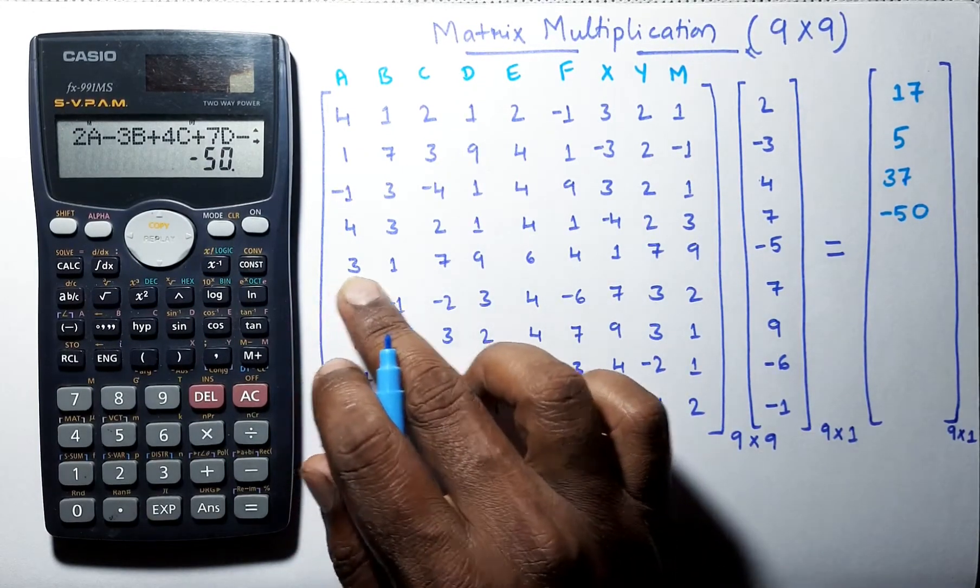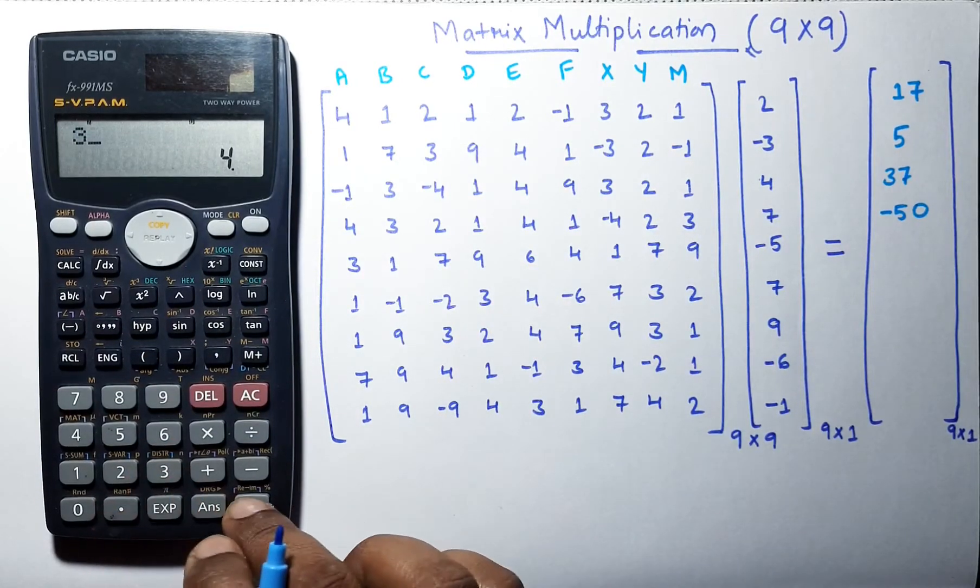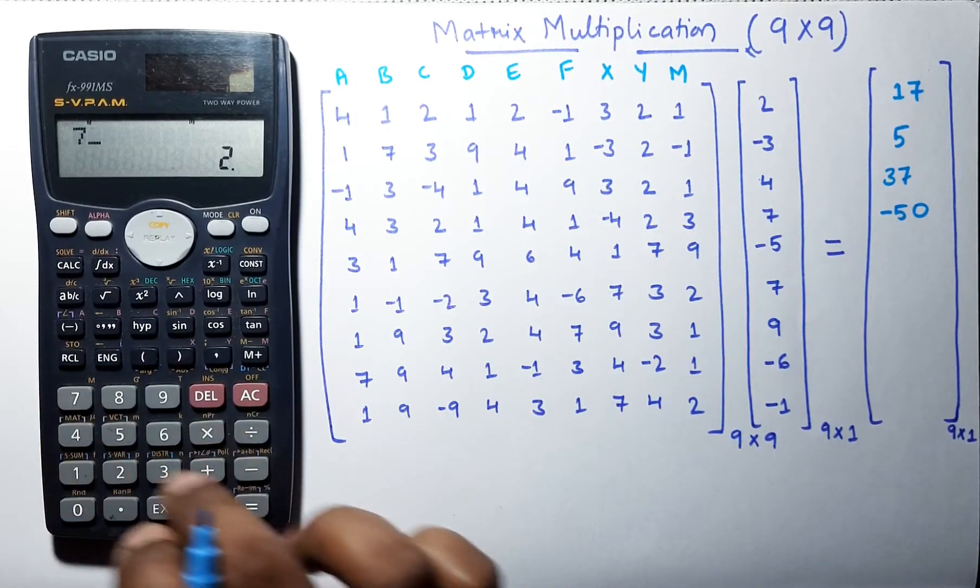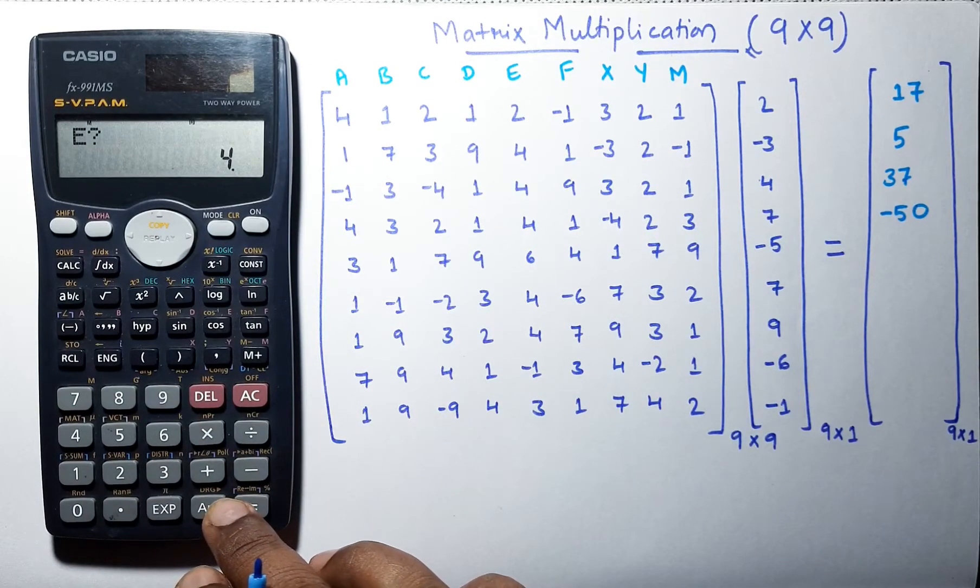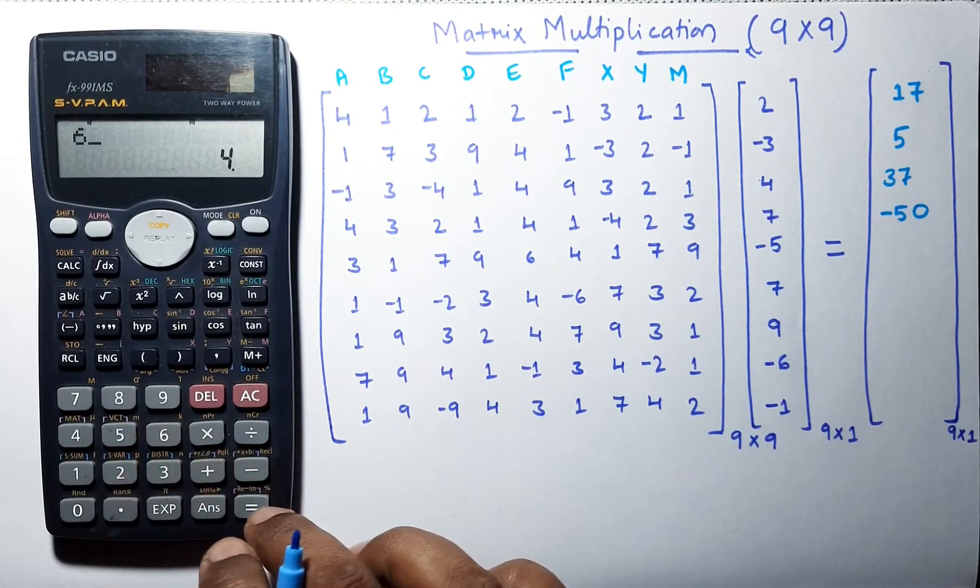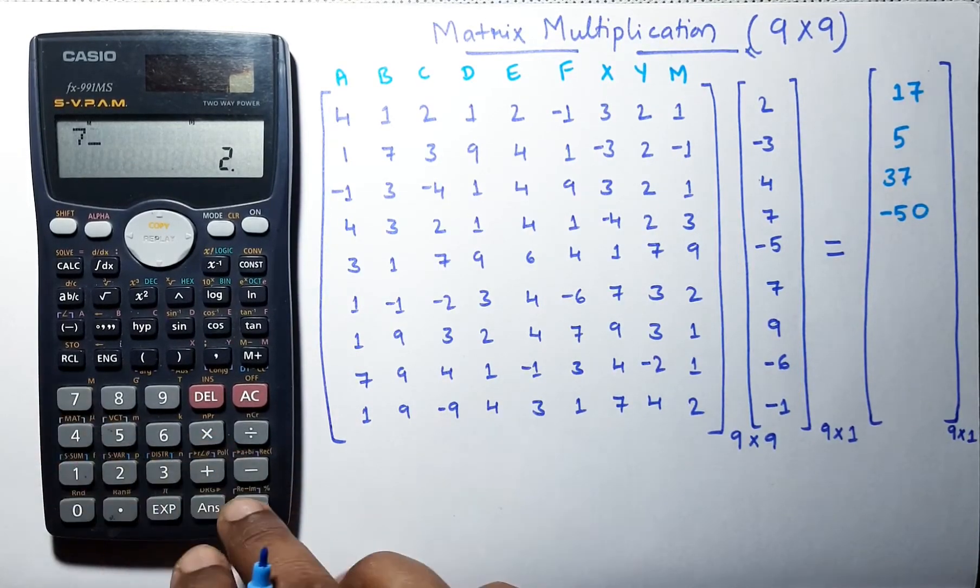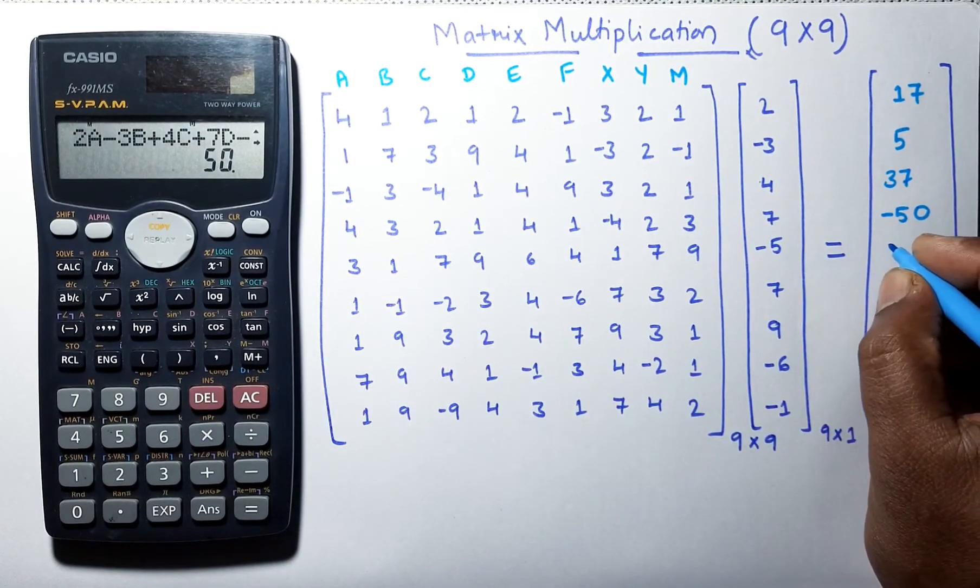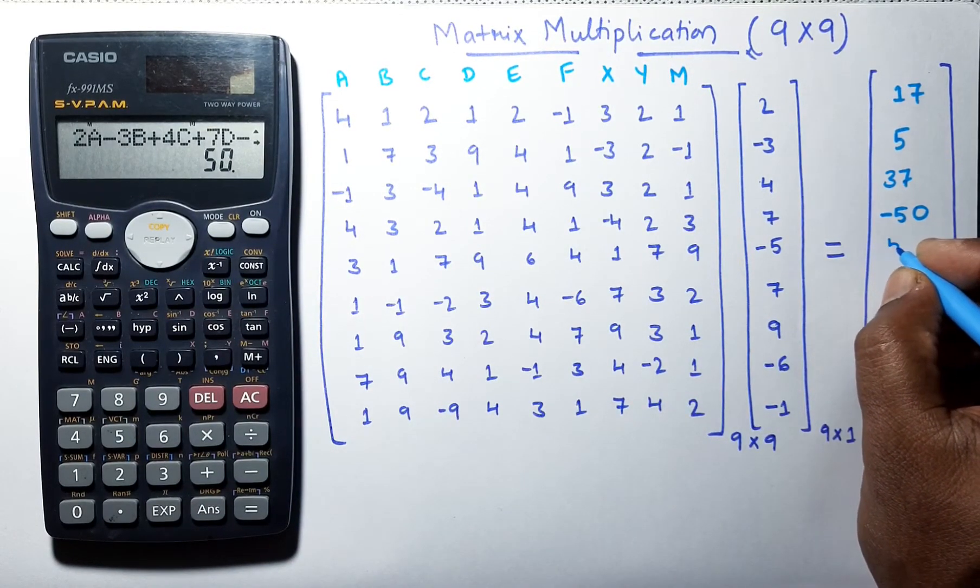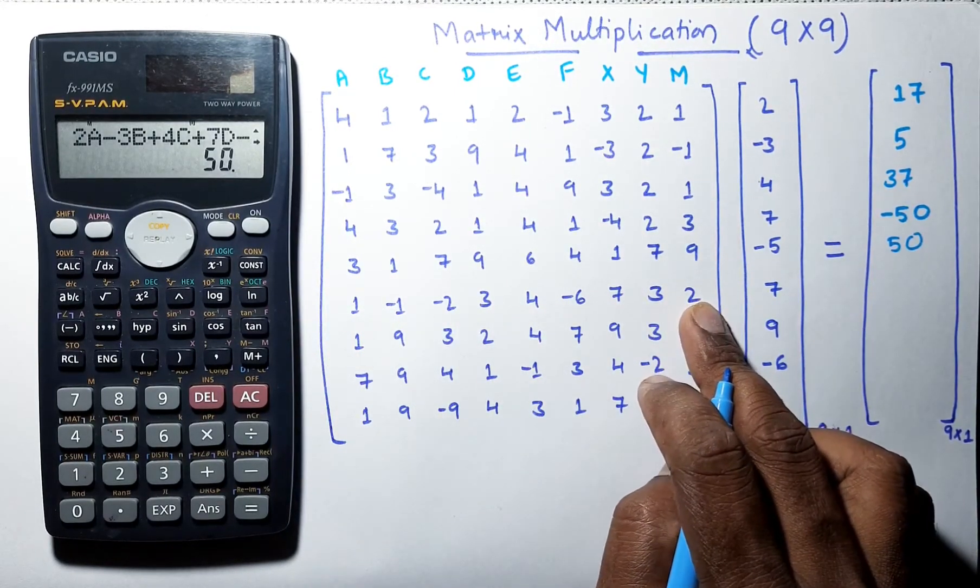Let us find out the next answer. 3, 1, 7, 9, 6, 4, 1, 7, 9. And the answer is minus 1.